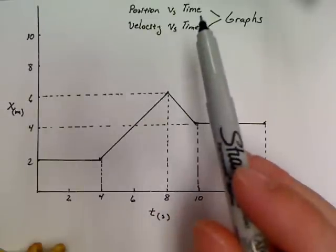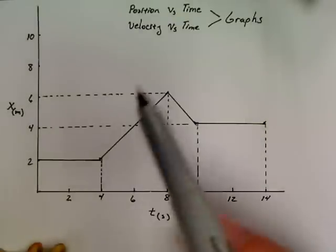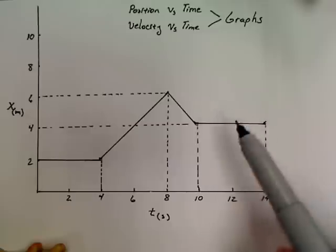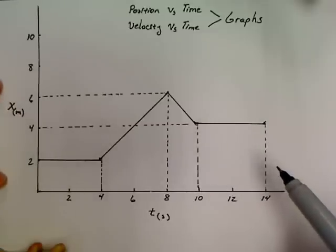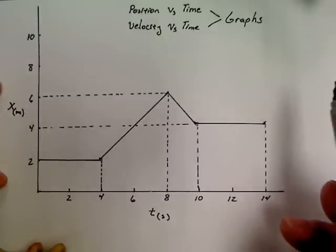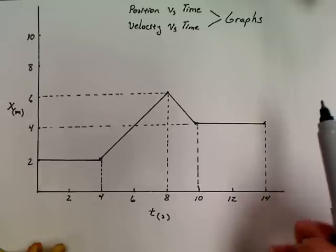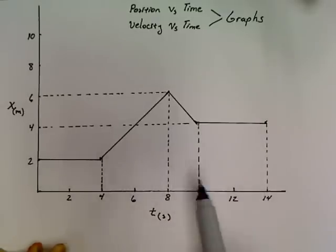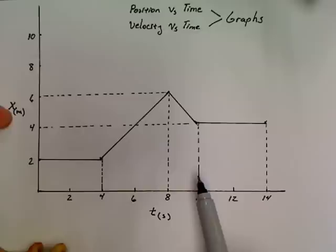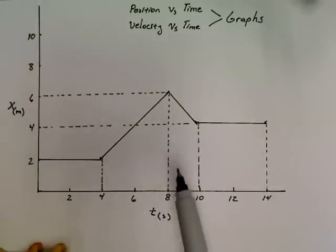Today's lesson is on position versus time graphs and velocity versus time graphs. To get started, you may want to pause and copy down this graph before we get started. Now that you've got it all copied down, let's take a look and go over what this graph actually means. We've got position or displacement here, and time measured in seconds along the bottom.